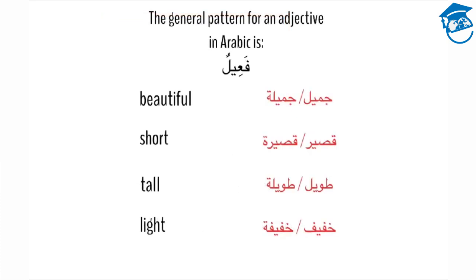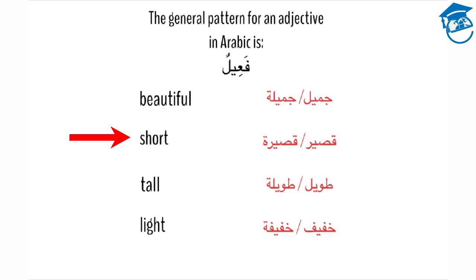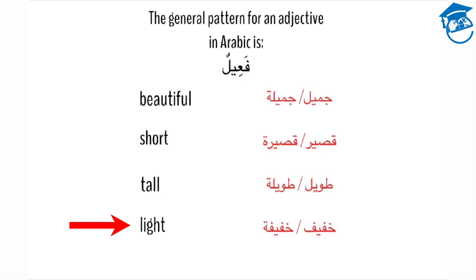The general pattern for an adjective in Arabic is fa'ilun, with fa, ein, and lam representing the root letters, and an added ya. For example: the word for beautiful is jamilun for male or jamilaton for female; short is qasirun or qasiraton; tall is ta'wilun or ta'wilaton; and light is ha'fifun or ha'fifaton. All of these adjectives have the fa'il pattern.